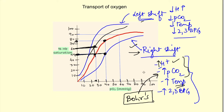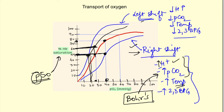P50 is defined as the partial pressure of oxygen at which hemoglobin is 50% saturated. In the normal curve, P50 is 26 mmHg. In a right-shifted curve, P50 increases to around 40 mmHg; in a left-shifted curve, it decreases. P50 is therefore an indicator of hemoglobin's affinity for oxygen and reflects the direction of curve shift.